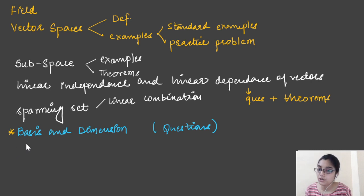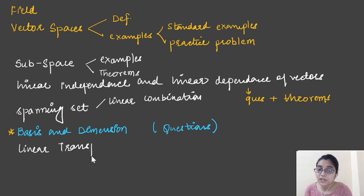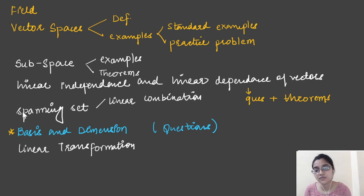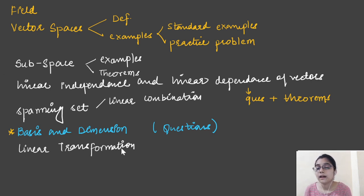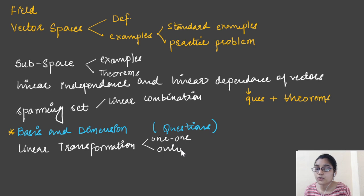It is very important to understand basis and dimension thoroughly because once you understand it, you will be able to find the basis and dimension of any subspace you encounter later — whether it's null space, range space, or anything else. After finishing basis and dimension, we will move to one of the most important topics in all of linear algebra: linear transformation. In linear transformation, we will see what mappings qualify as linear transformations, followed by examples.